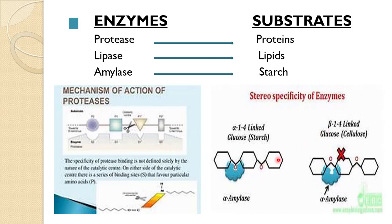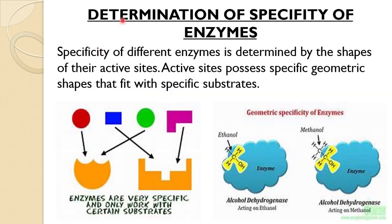This diagram also shows the breakdown of proteins, and another diagram shows the breakdown of starch. The specificity of different enzymes is determined by the shapes of their active sites. Active sites possess specific geometric shapes that fit with specific substrates, and this is illustrated in both diagrams showing enzymes' specific geometric shapes.